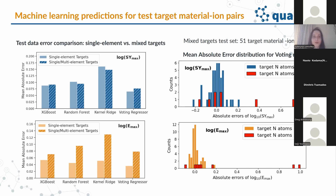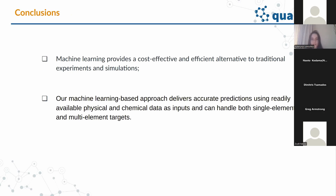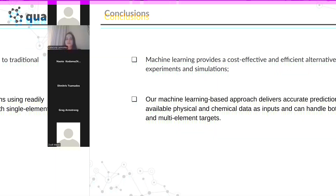The model trained for targets composed of an arbitrary number of elements generalizes well to new data. In conclusion, machine learning provides a cost-effective and efficient alternative to traditional experiments and simulations. We demonstrated that our machine learning-based approach can deliver accurate predictions using readily available physical and chemical input data, and can handle both single-element and multi-element targets. Thank you for your attention.